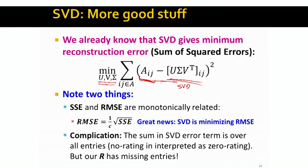The sum of squared errors is basically the same as root mean squared error — they are monotonically related. Root mean squared error is the square root of the sum of squared errors multiplied by one over the number of data points. This basically means SVD is already minimizing the root mean squared error. SVD finds the three matrices that give us the best possible root mean squared error. So it seems SVD is really the right thing to do in this case.